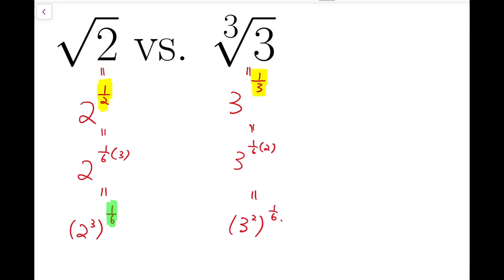Now I've somehow managed to rewrite the indices of the two numbers into the same number, which is one sixth, and now we can compare the bases directly. The base of the number derived from square root of 2 is 8, while the base of the other number is 9. So we can quickly see that cube root of 3 is larger than square root of 2.